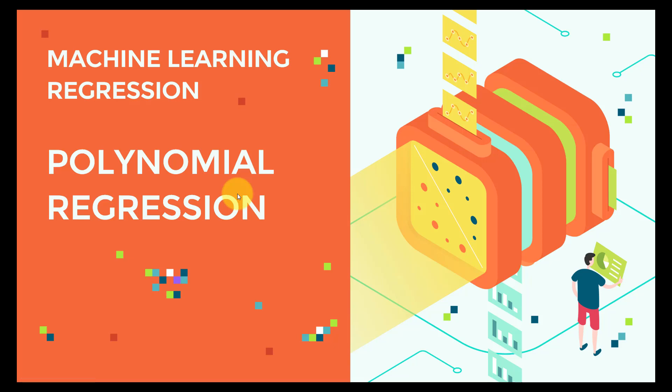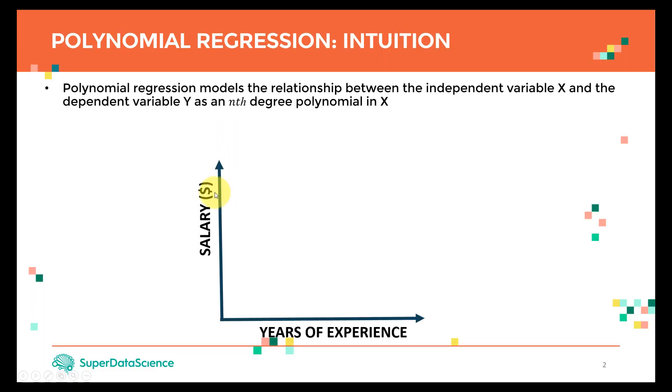Hello everyone and welcome to this lecture. In this lecture we're going to cover the intuition behind polynomial regression. As a basic definition, polynomial regression models the relationship between the independent variable X and the dependent variable Y as an nth degree polynomial in X.